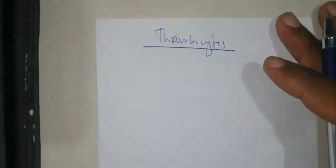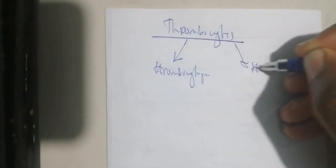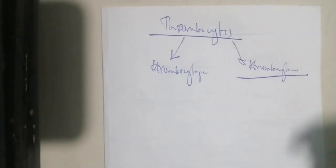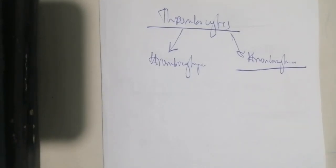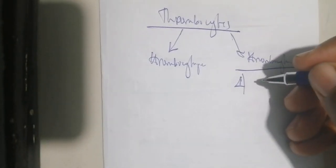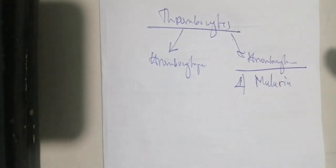When you have thrombocyte disorders, the count can either be above or below the normal value. It can either be thrombocytopenia or thrombocytosis. Thrombocytosis results in an increase in thrombocyte count. One thing that can increase the thrombocyte count, in our context, is malaria — malaria increases the thrombocyte count.